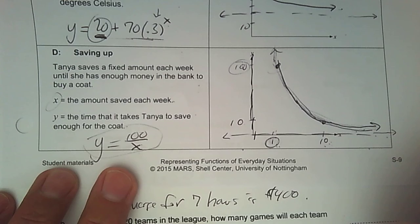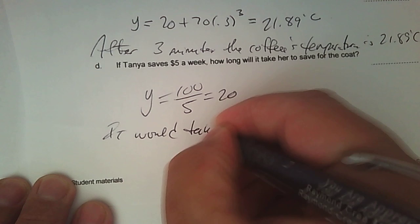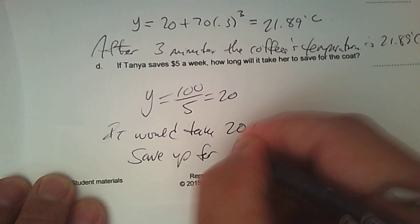Let's go and answer the last question. If Tanya saves $5 a week, how long would it take? So at $5 a week, it would take how many weeks to be able to save for a coat? And the answer is 20 weeks. And that's it. Mr. G Math, over and out. Good job doing your work today. Thank you.